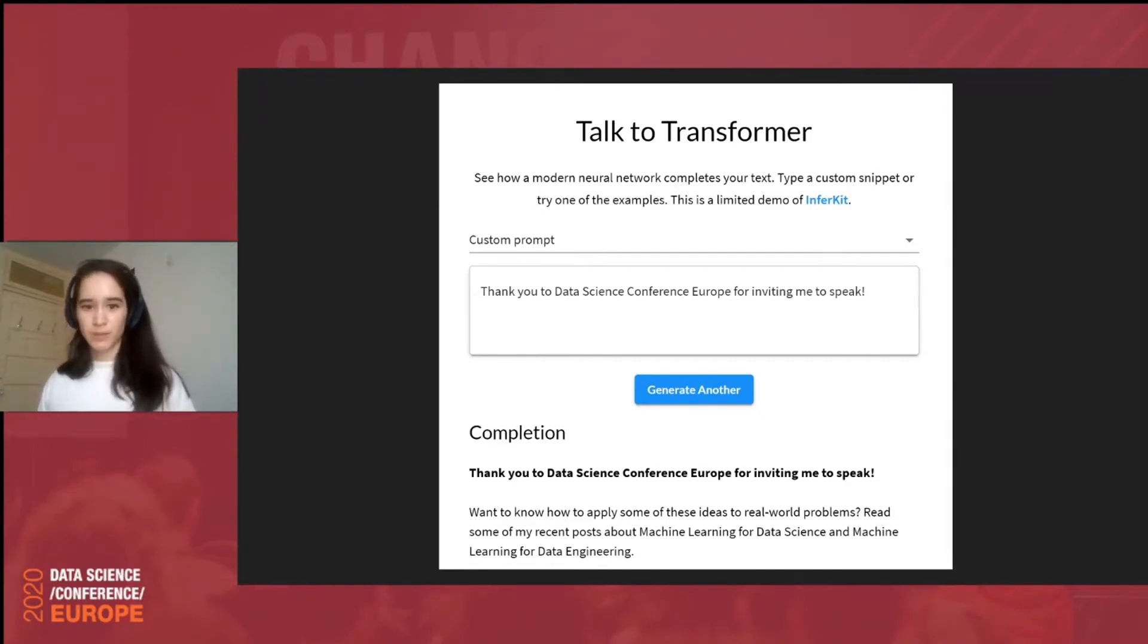Now, given a prompt such as this example here, you can create a paragraph that might be very close to what a human would actually say. So, here's the prompt I gave it. I gave it, thank you to Data Science Conference Europe for inviting me to speak. And then I have done some language generation by using this cool tool called Talk to Transformer. And apparently, I go on to advertise my machine learning blog.